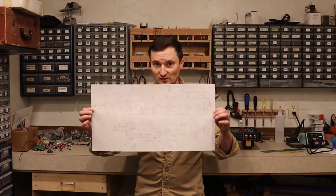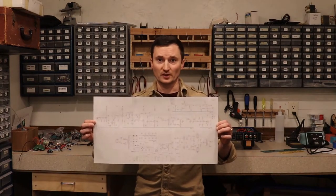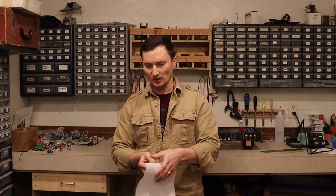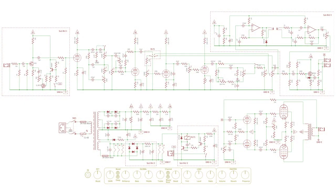Okay, so this is the schematic that we're working from. And I'll put a bigger one up on the screen so you can take a look at it. If you're familiar with the Dumble Overdrive Special circuit, then you'll see it's basically an ODS with a couple minor changes. The most notable one being the fact that it's got that notch filter after the fourth stage on the overdrive channel. And then it's got the reverb and effects loop and all that.